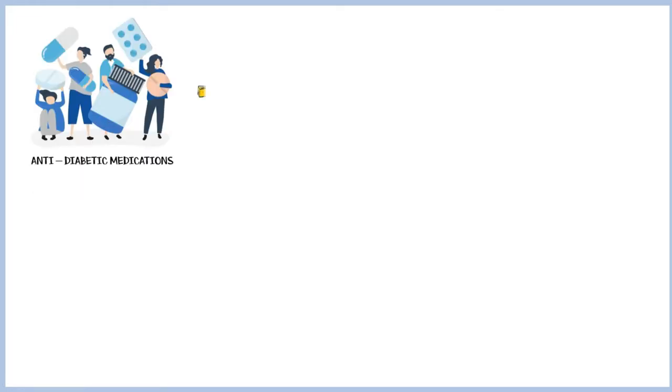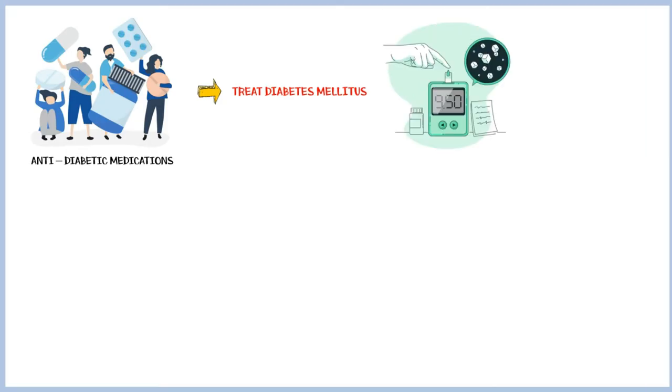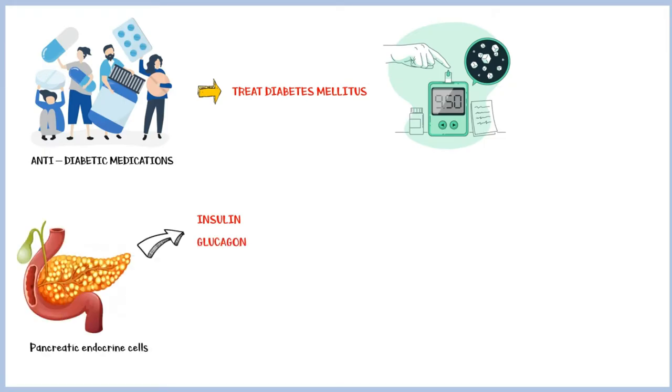Antidiabetic medications are used to treat diabetes mellitus, a condition characterized by high glucose levels in blood. In healthy individuals, blood glucose level is tightly regulated by the hormones insulin and glucagon secreted by the pancreatic endocrine cells.